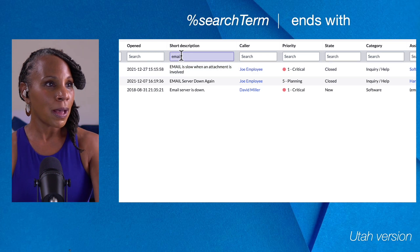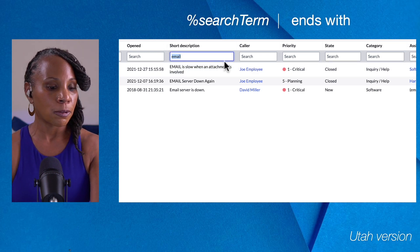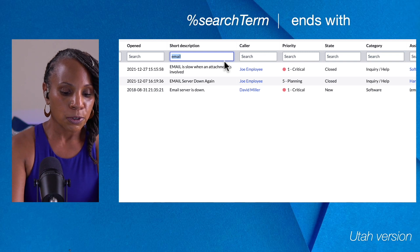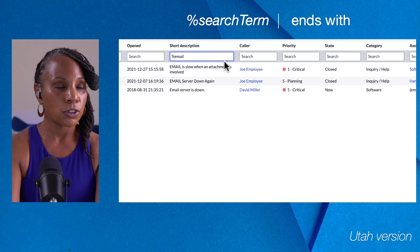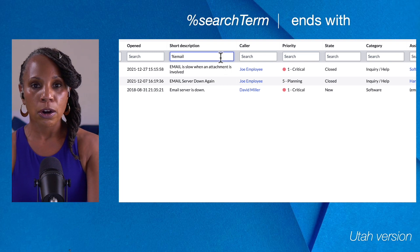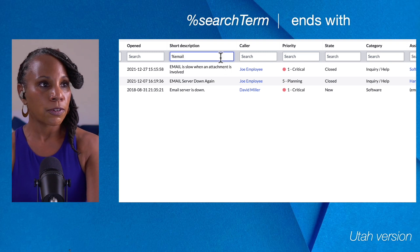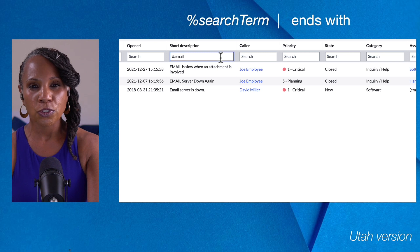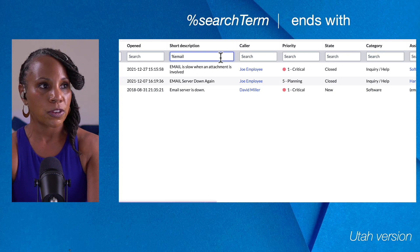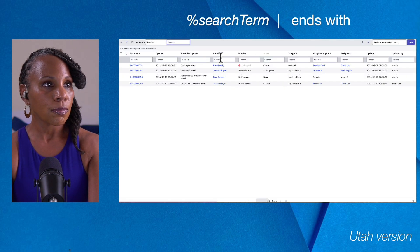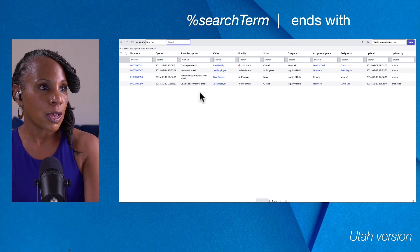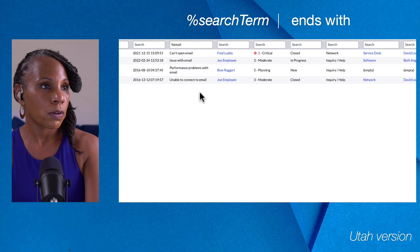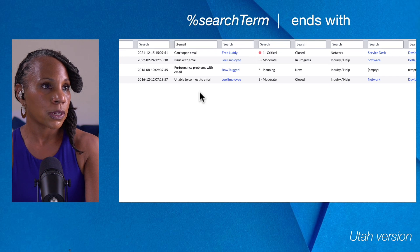What about short descriptions that end with 'email'? That would be percentage sign first, and then email. Keep in mind you can use these wildcards for any of the column searches — we're just using Short Description for our purposes today. And here we are: our subset of records now all end with the word email.